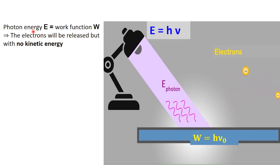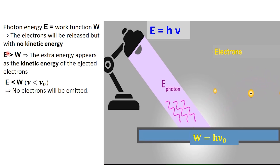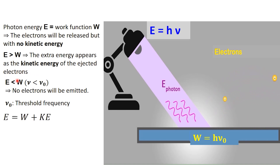If the photon energy is exactly equal to the energy binding the electrons in the metal, the electrons will be released but with no kinetic energy. If the light's frequency is above this minimum, the extra energy appears as the kinetic energy of the ejected electrons. If the frequency is below the threshold frequency, the photon's energy is insufficient to overcome the binding energy — no matter how intense the light is, no electrons will be emitted. This minimum frequency is called the threshold frequency, and the corresponding minimum energy is called the work function.